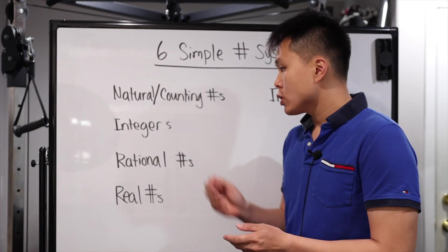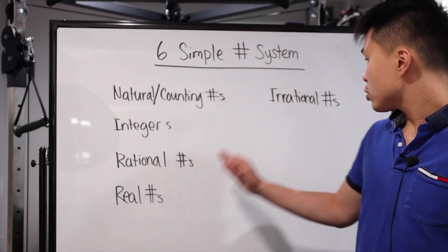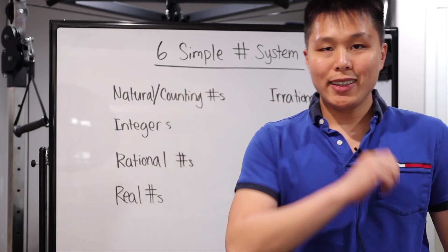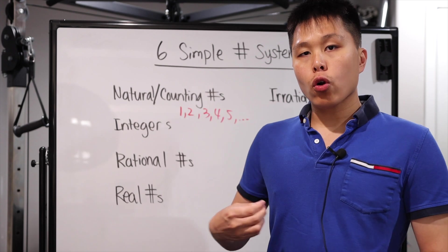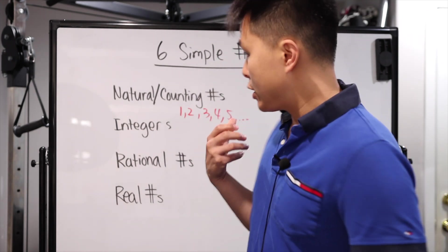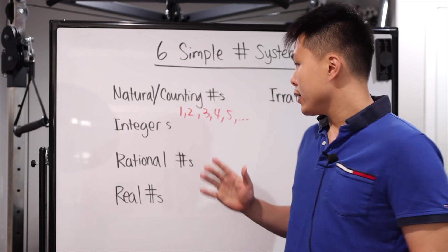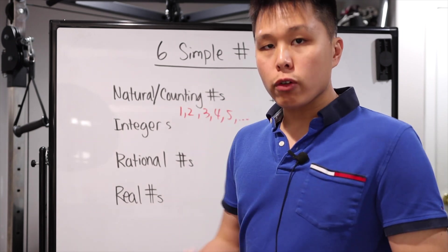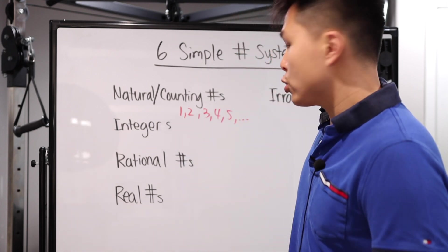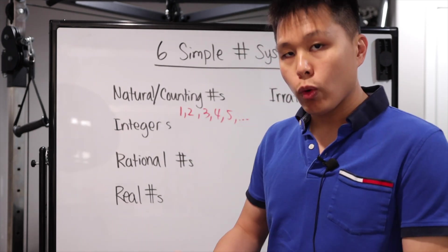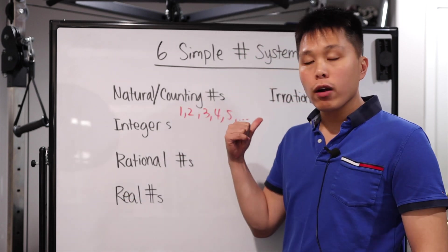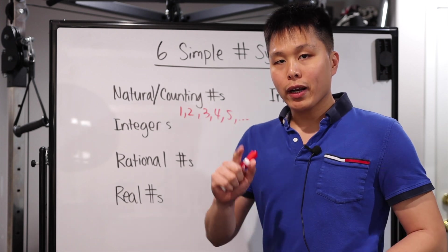It's going to be natural and counting numbers, integers, rational numbers, real numbers, and irrational numbers. And there's a specific reason I wrote it out this way. The first one is natural or counting numbers — it's been called both ways. The counting number is more intuitive; it's basically numbers you use to count objects: one, two, three, four, 1000, 5000, so on and so forth. It keeps going forever. That is the natural or counting numbers.